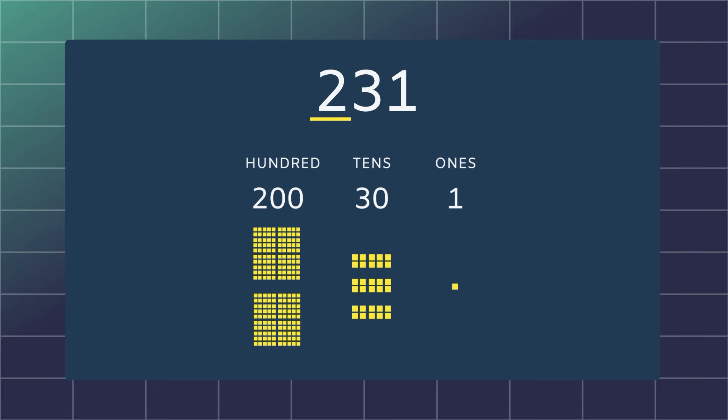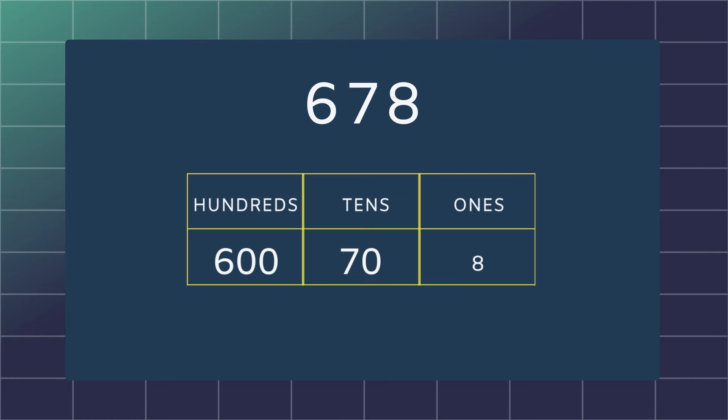If you take the number 678, start from the right to the left. The 8 is in the ones place, the 7 is in the tens place and the 6 is in the hundreds place.